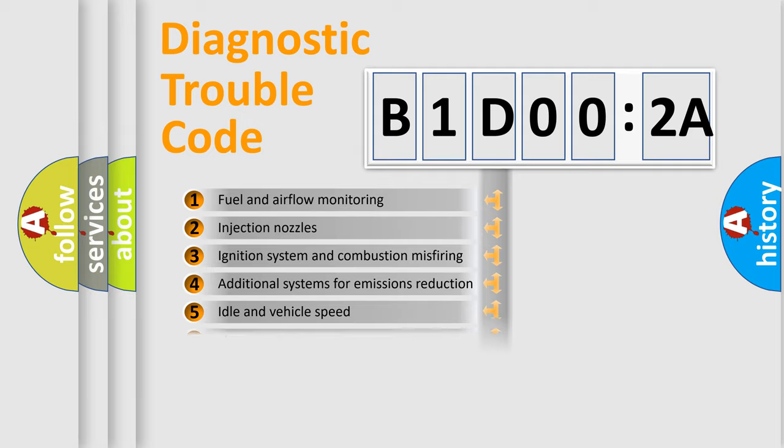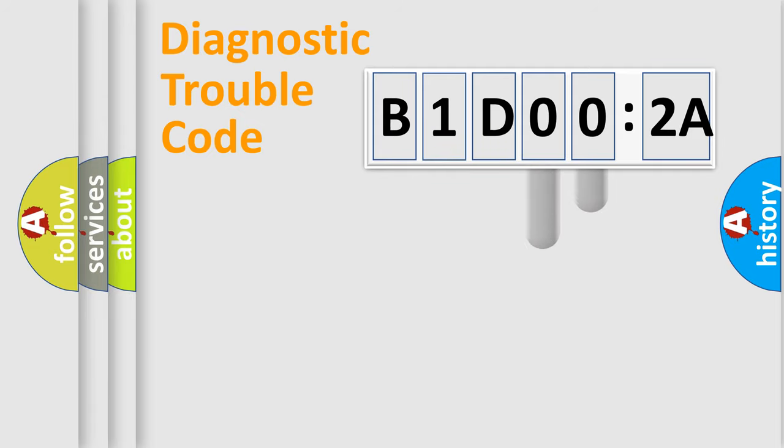The third character specifies a subset of errors. The distribution shown is valid only for the standardized DTC code. Only the last two characters define the specific fault of the group.